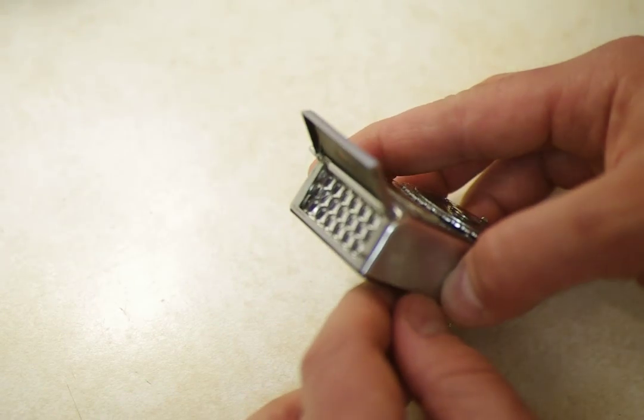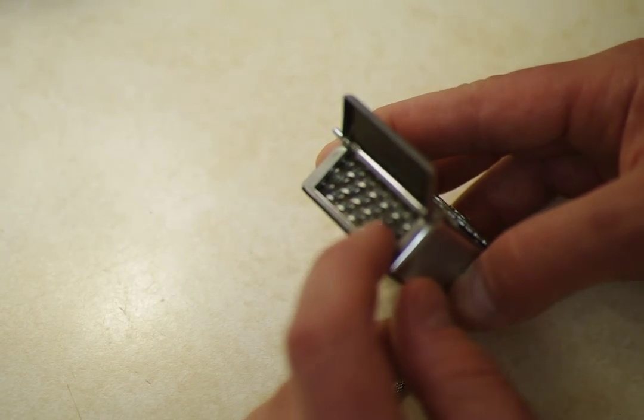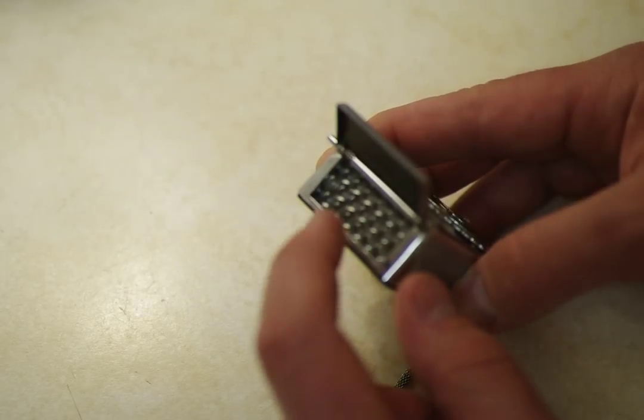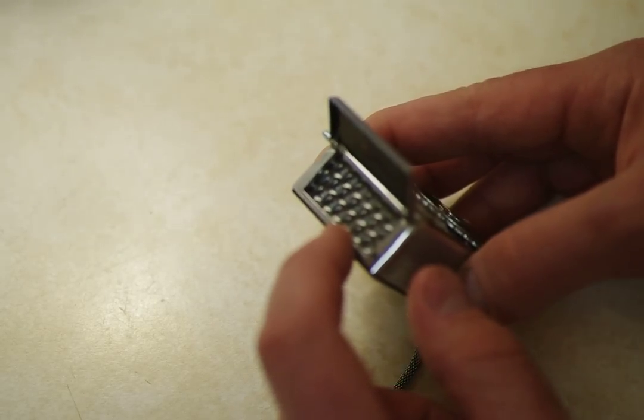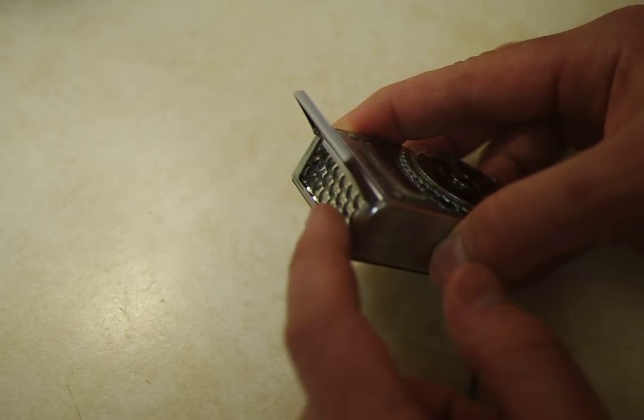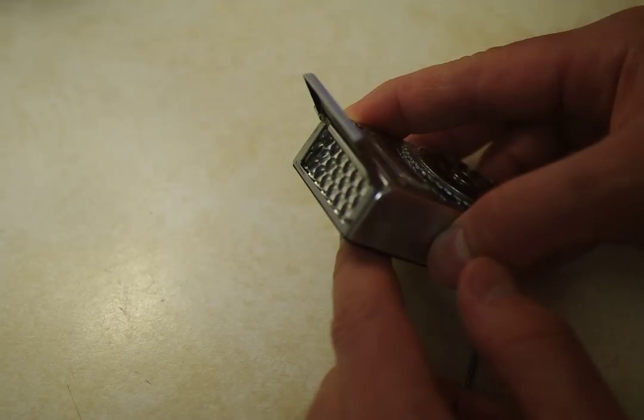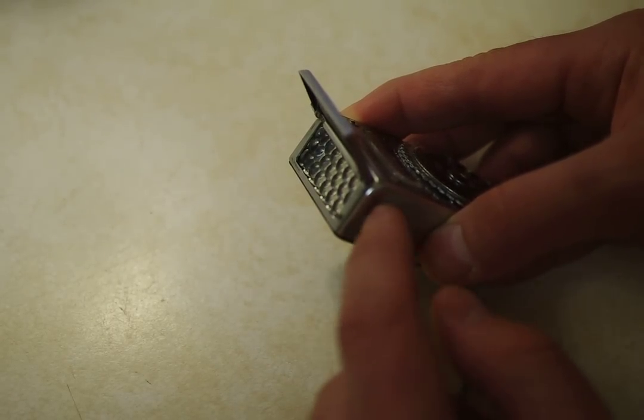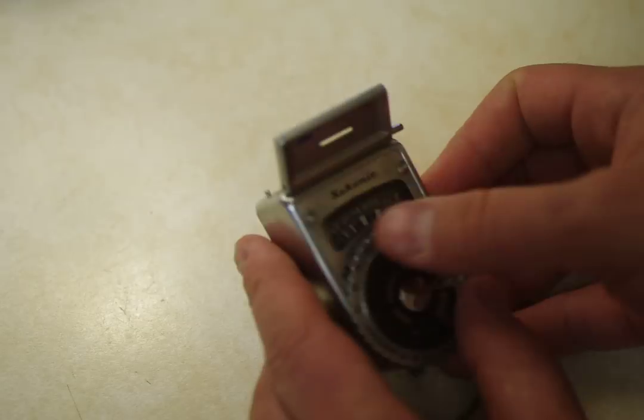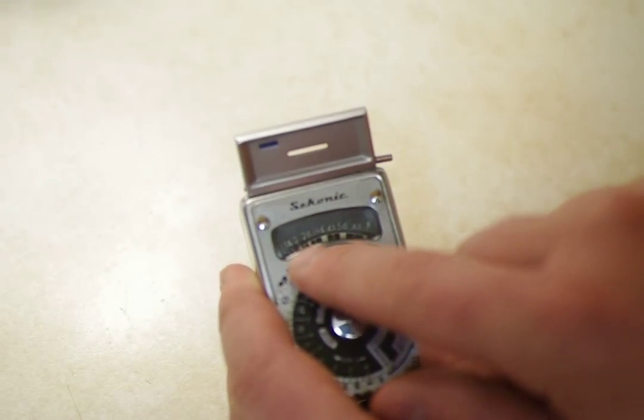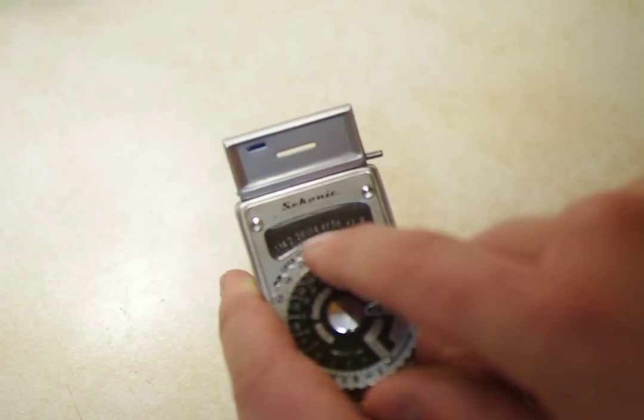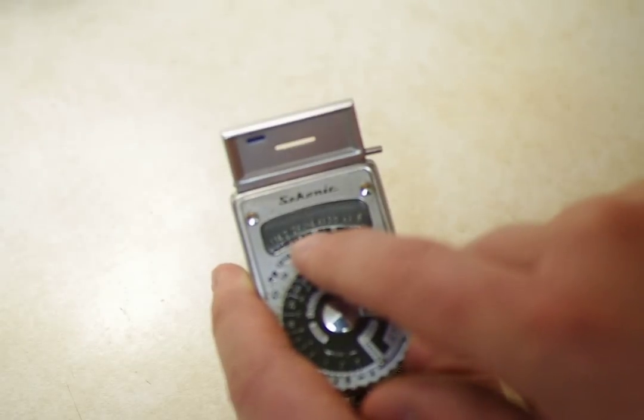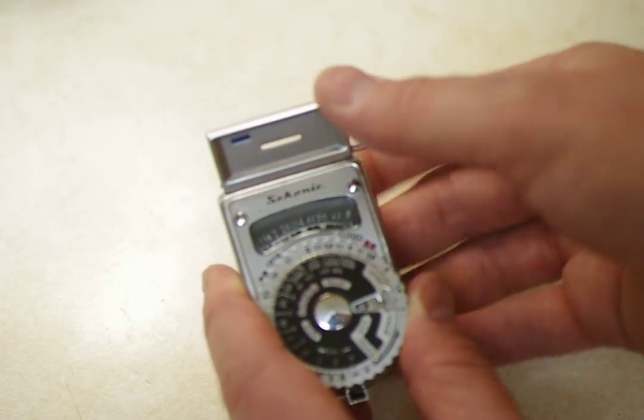On the front of it, you can see those little bubbles. That's a plastic or glass front that allows light into the light meter. There's a selenium cell in the back here. And as light hits the selenium cell, it creates a little charge, which then causes this little red indicator to move to the right or to the left.